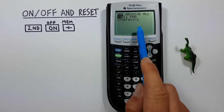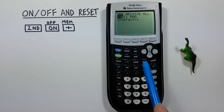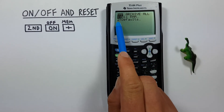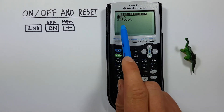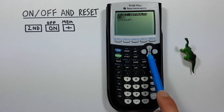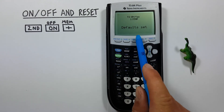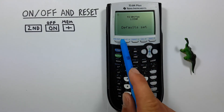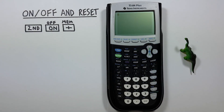That'll bring you to this menu here, and again, if you scroll down to two or press two to select Defaults, it'll confirm if you want to reset the defaults. We do, so we'll scroll down and press Enter. You'll see this screen telling us the calculator has been reset, and if we press Clear, we're now good to go ahead and work with it.